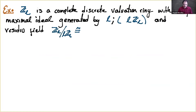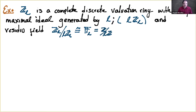One important property is that ℤ_ℓ is a complete discrete valuation ring with a unique maximal ideal generated by the prime ℓ, whose residue field is exactly the finite field 𝔽_ℓ. You recognize this is exactly what happens with the ring that Miriam defined.